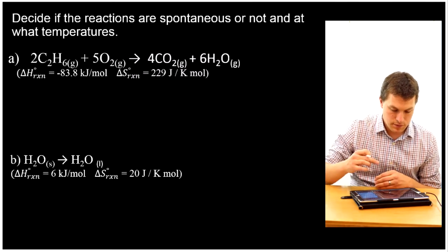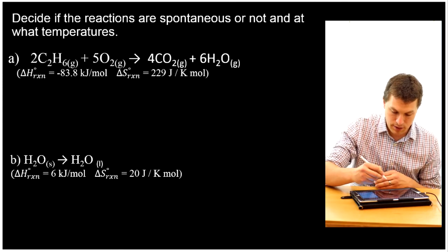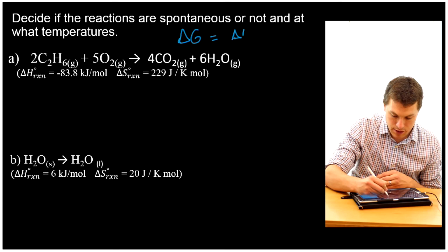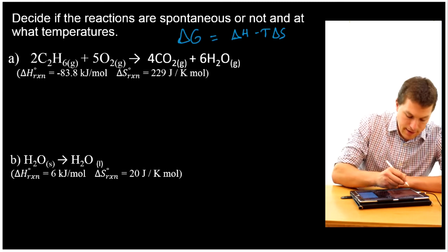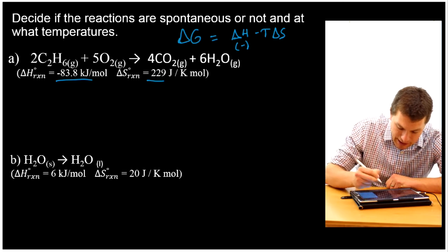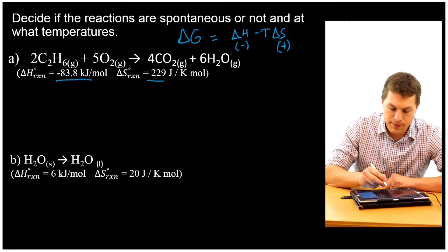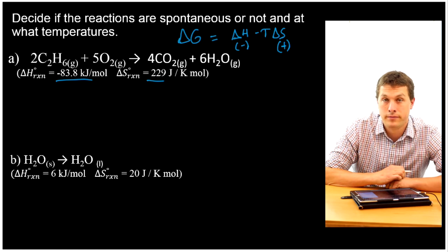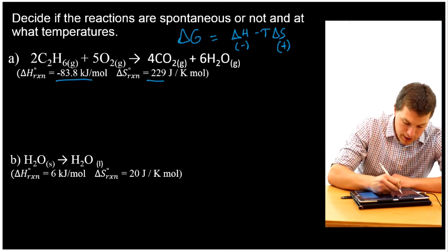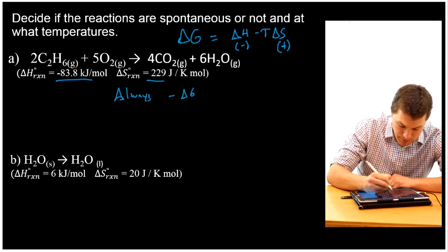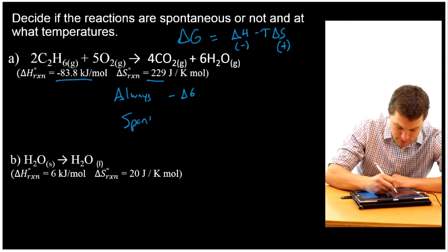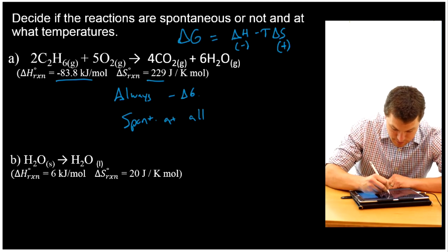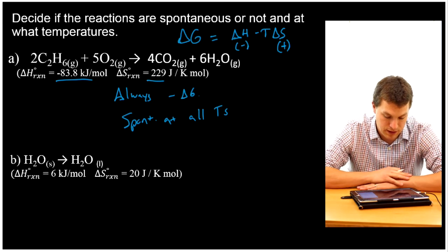Here we have two reactions. For the first one, delta G equals delta H minus T delta S. In this case, we have a negative delta H and a positive change in entropy. That means I have a negative term, and I'm subtracting a positive term from it — a negative number minus a positive number is always negative. So this reaction always has a negative delta G, meaning it's spontaneous at all temperatures.